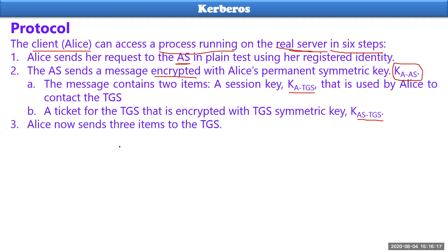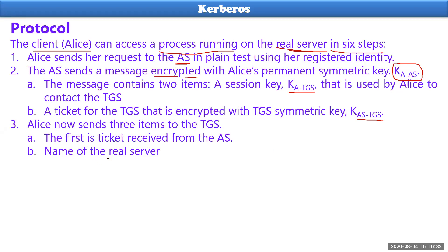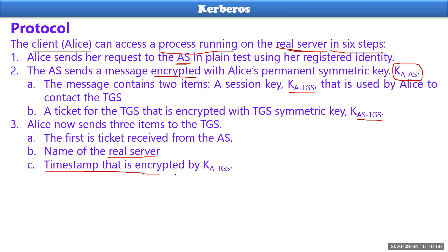Alice then sends three items to TGS: first, the ticket received from AS; second, the name of the data server she wants to communicate with; and third, the encrypted key with a timestamp showing when it was generated by AS. If a timestamp is present, many hackers cannot obtain the specifications of that TGS.